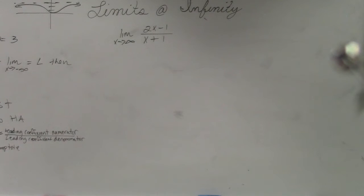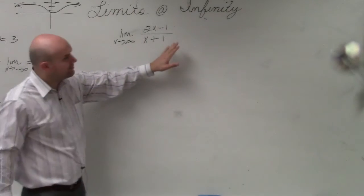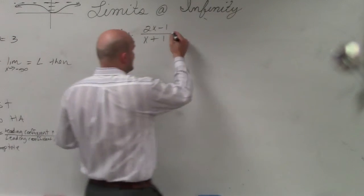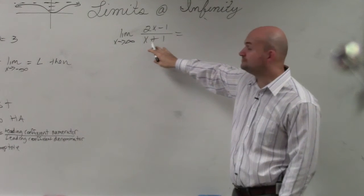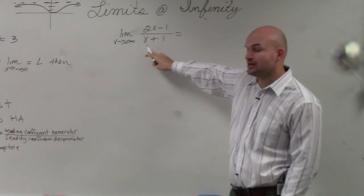Anyways, here's the process. If we want to evaluate for this limit, one thing that we can do is take each one of our values and divide it by our variable with the highest power in our denominator.